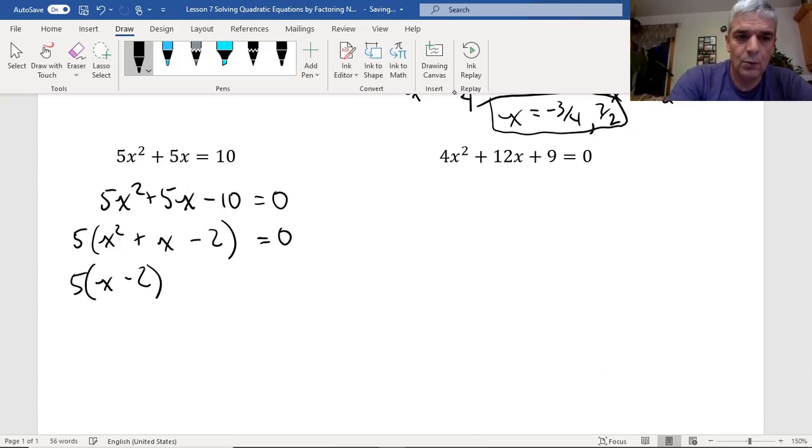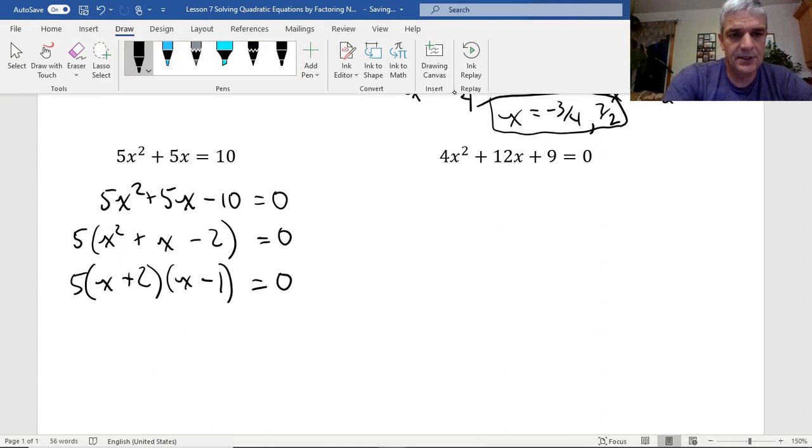And then I can factor this, factors of 2 that have a difference of 1 or 2 and 1. So it ends up being x minus 2, oh no, plus 2, I apologize, and x minus 1 equals 0. So the positive number has to be larger, they have to be different signs, and they have to multiply for 2, and they add together to give me plus 1. Now, I don't even need to worry about the 5 here out front, because now it's just basically three numbers that are multiplying. 5 times another number, times another number. So I can see my answers here pretty quickly.